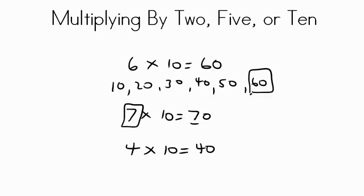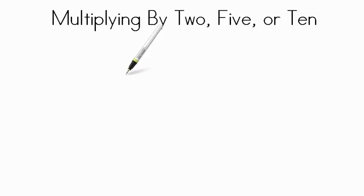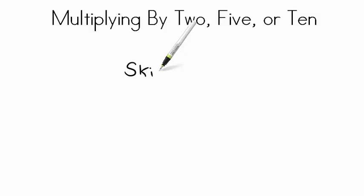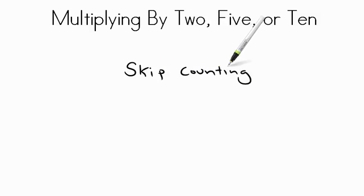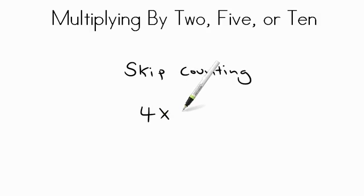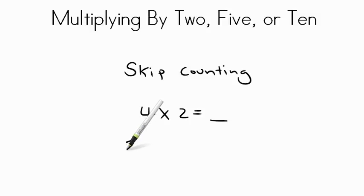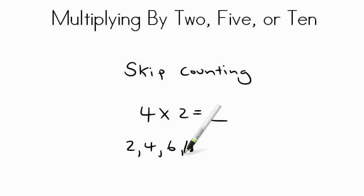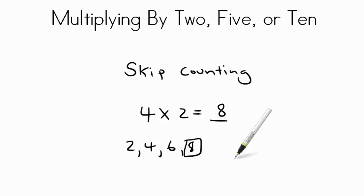Great work. Today we've been practicing multiplying by 2's, 5's, or 10's. If you practice your skip counting when you are multiplying, it will help you quickly solve the answer. Let's do one more in review. If I asked you what 4 times 2 equals, you can skip count to figure that out: 2, 4, 6, 8 — answer being 8, because you have 4 groups of 2. Nice work.